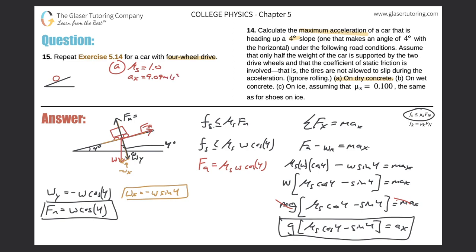For part (b), wet concrete, the coefficient of static friction is 0.7. Plugging in: a sub x equals 9.8 times (0.7 times cosine of 4 minus sine of 4), which gives an acceleration of 6.16 meters per second squared.